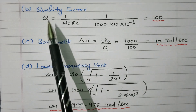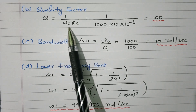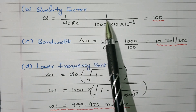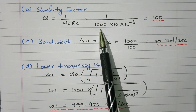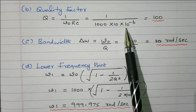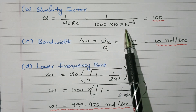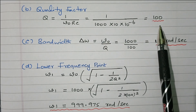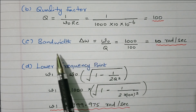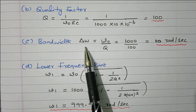Next we'll find the quality factor Q. Q equals 1 divided by omega naught times R times C. That is 1 divided by omega naught (1000) times R (10 ohm) times C (1 micro Farad, i.e., 10 to the power minus 6). Simplifying, we get 100. So the quality factor Q is 100.